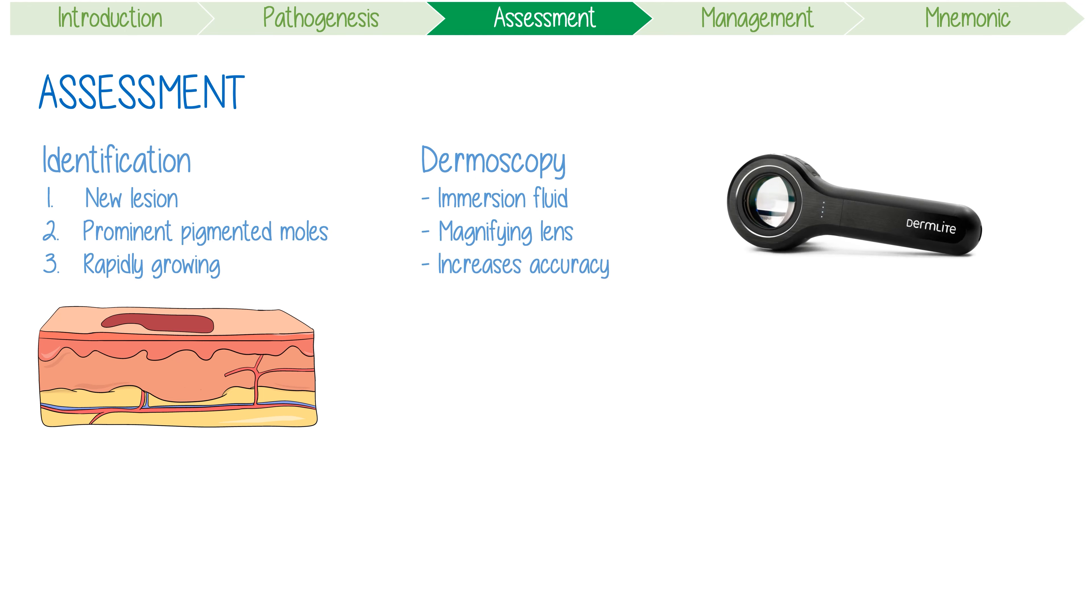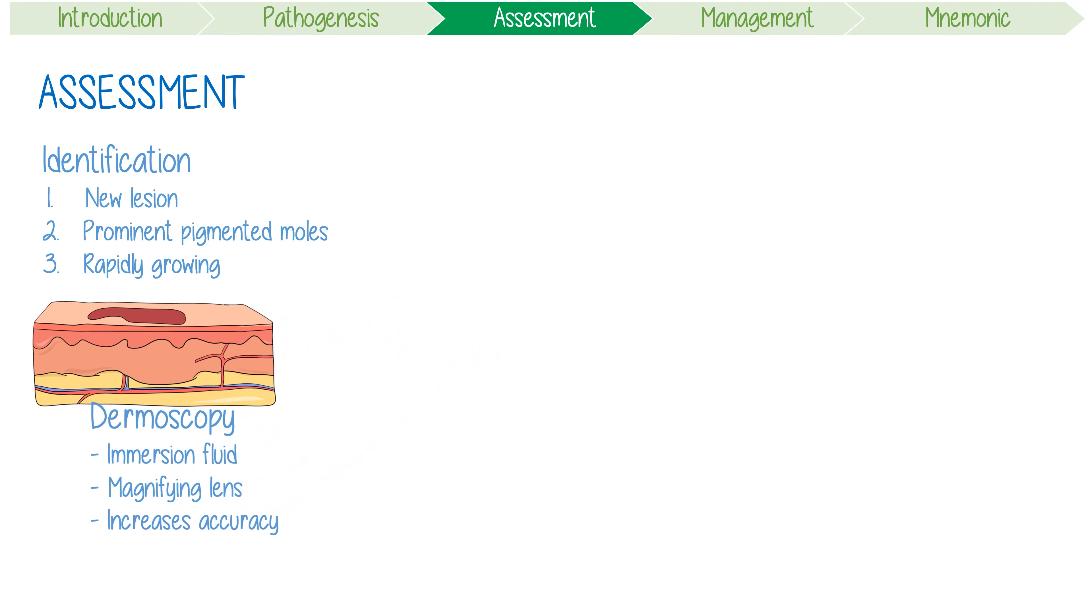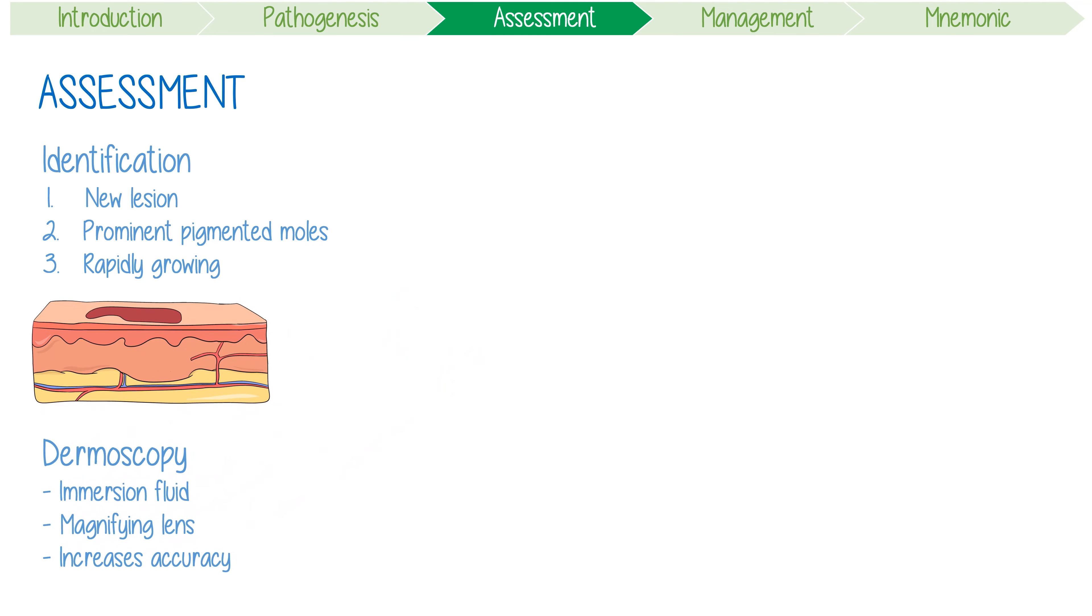Evaluation of the lesions can be structured using the ABCDEFG rule. A is for asymmetry - note if one half of the mole is different to the other. B is for border - check if the border demarcation is regular or irregular. C is for color - is there an abnormal variation in the color? Don't forget that sometimes melanomas are actually hypopigmented.